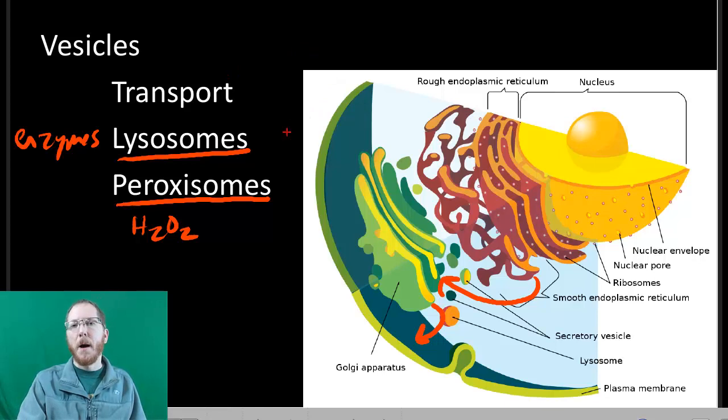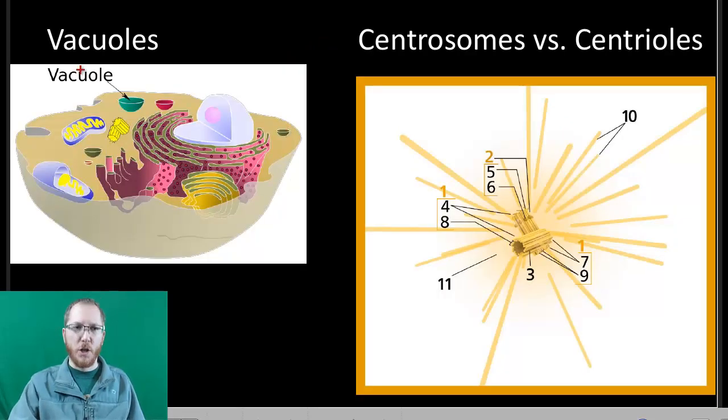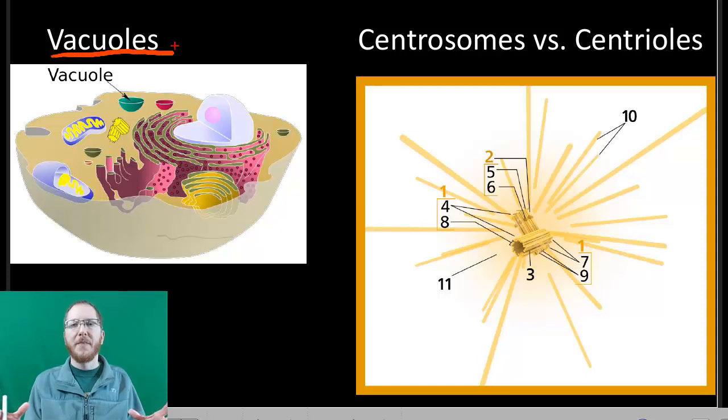Now if we kind of take a step up from a vesicle, we can get to a vacuole. Now a vacuole is just generally going to be larger, and sometimes they're a bit more specialized. So usually when people think of vacuoles, they think storage. And that is pretty true.